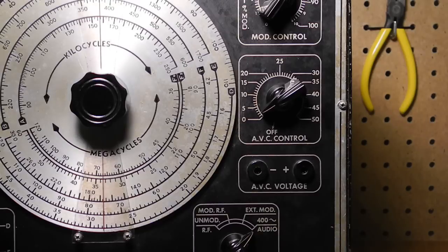Precision promoted a method of alignment they called the AVC substitution method. The idea was that automatic volume control or AVC action affects the behavior of receiver circuits. Normal practice is to align with the lowest possible signal to minimize AVC action.